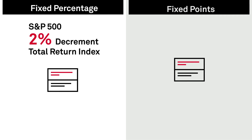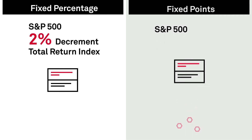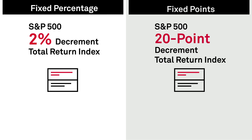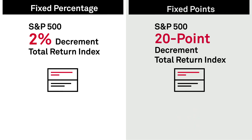On the other hand, an S&P 500 20-point decrement total return index would deduct a daily portion of 20 index points from the decrement index level.